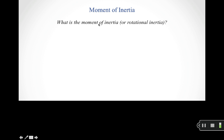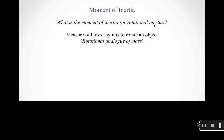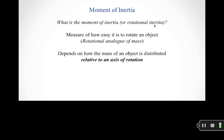The moment of inertia and the rotational inertia are two names for the same thing. The moment of inertia is a measure of how easy it is to get an object to rotate — it's the rotational analog of mass. Just as mass measures how easy it is to accelerate an object, rotational inertia measures how easy it is to change how an object is rotating.